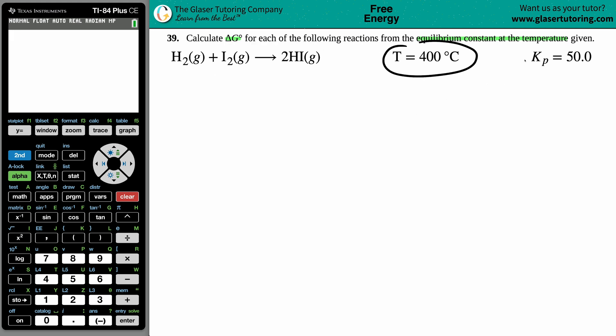400 degrees Celsius and a Kp value of 50.0. When they give you an equilibrium value, a K value, and you're solving for your Gibbs free energy, your ΔG, there's only one formula